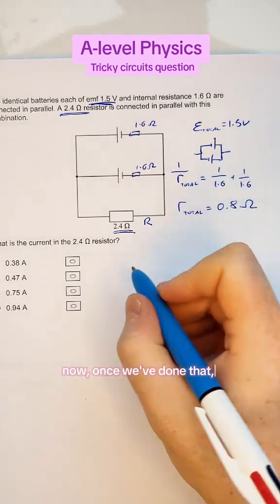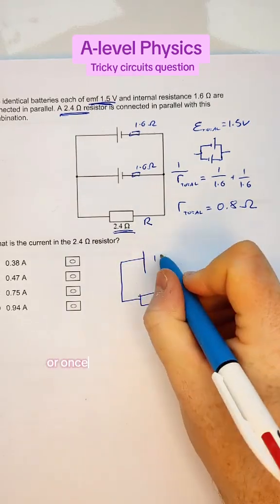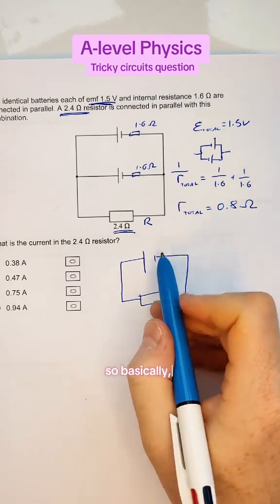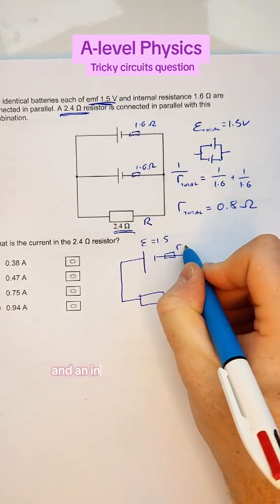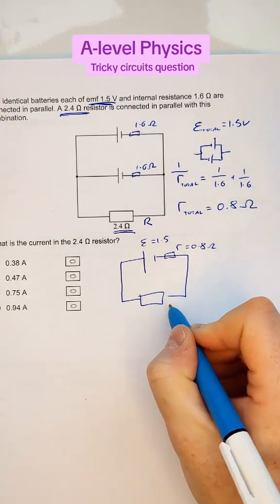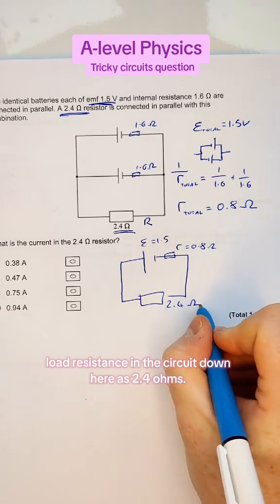Once we've done that, I find it helpful in these questions to redraw the circuit once you've figured out what to do with it. Basically, it's the same thing as if we've got a series circuit with an EMF of 1.5 and an internal resistance of 0.8. And we also have our big R, our load resistance in the circuit down here as 2.4 ohms.